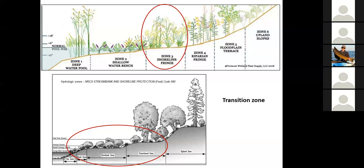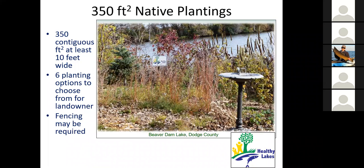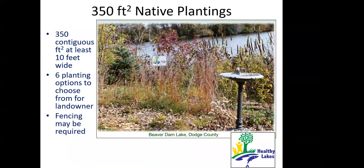In the Healthy Lakes best practice, it's a 350-square-foot native planting — a nice first step stewardship activity that any landowner can take along a lake, river, or stream. You can shape these native plantings the way you need to fit them on the shore: they have to be at least 10 feet wide, but it could be an 18 by 19 foot square shape or a more L-shaped configuration — say 10 feet of shoreline going for 35 feet across.